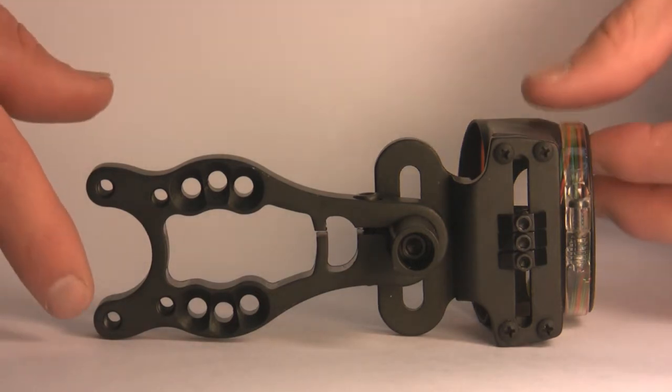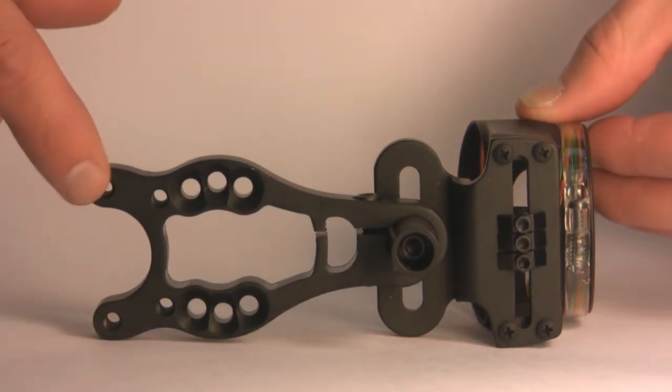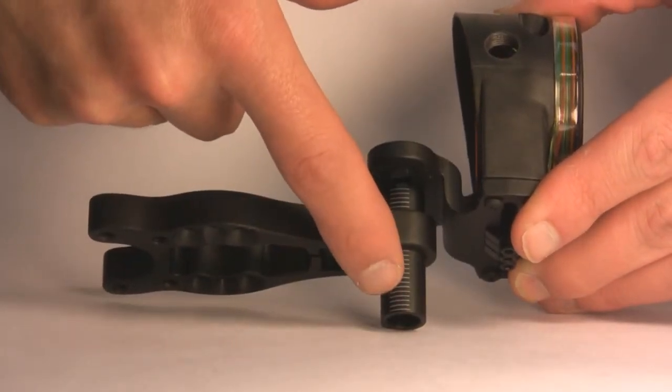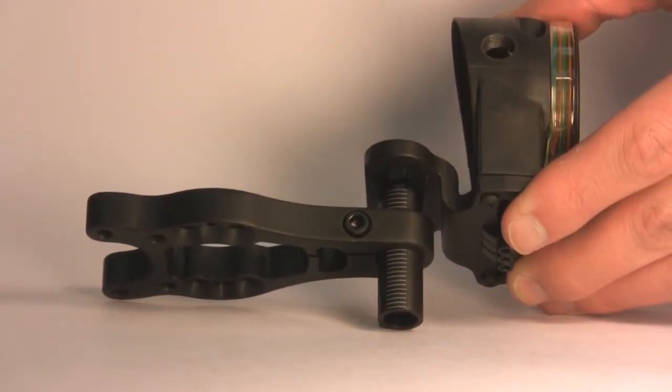You'll also notice the Grave Digger has two threaded holes for your quiver mounts. There's also an extra-wide windage member with laser-engraved lines.